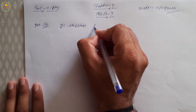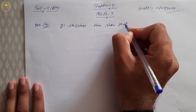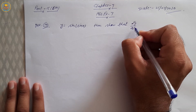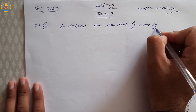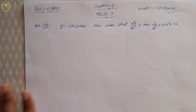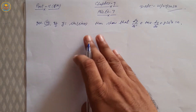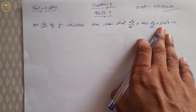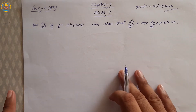then show that d²y/dx² + tan x · dy/dx + y · cos²x = 0. If y = sin(sin x), then show that d²y/dx² + tan x · dy/dx + y · cos²x = 0.